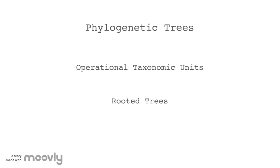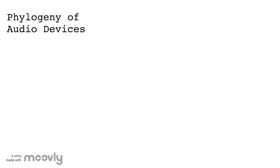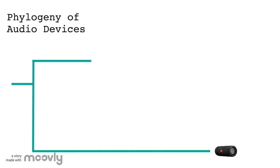The example tree we're going to go over today uses audio devices as the OTUs. We can't really compare their DNA, so instead the different OTUs are going to be determined by differing designs. We'll build the tree up from the root. At the first node, representing the common ancestor, headphones diverged from speakers and continued to evolve independently.